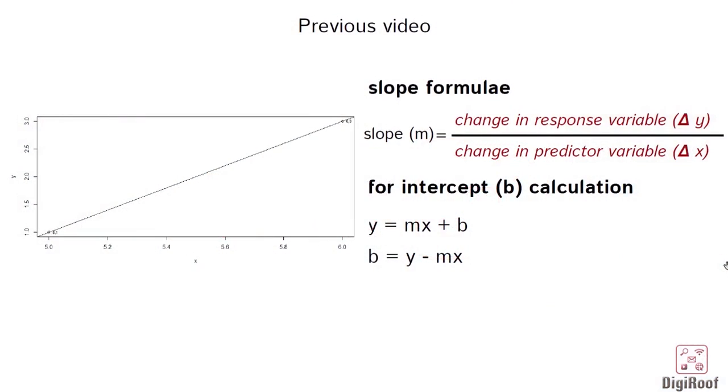Just before these few videos dealing with the basics of statistics, we understood the formula of slope and intercept. We understood how to calculate slope using the formula change in y over change in x, where x is the predictor and y is the response variable. After this, we calculated intercept by placing the slope value in the line equation, which is y equal to mx plus b.